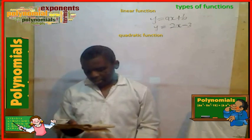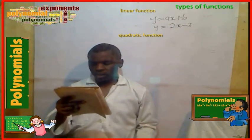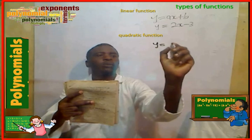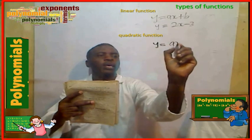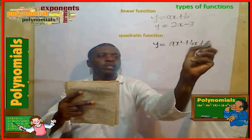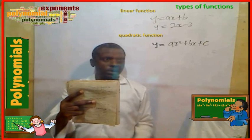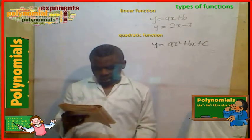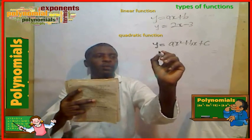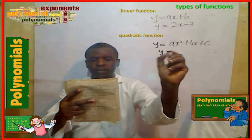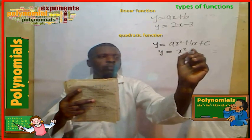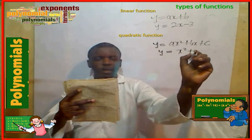Second type of function: the quadratic function. Example: y = ax squared + bx + c. This is the general form of a quadratic function. For instance, y = x squared + x minus 2.